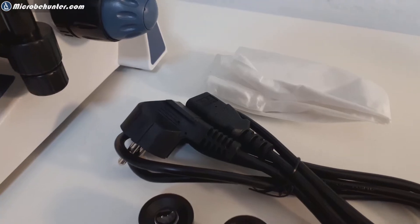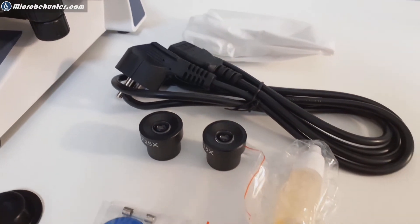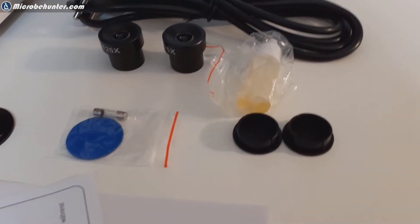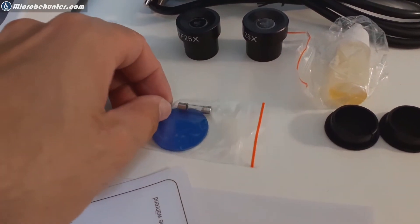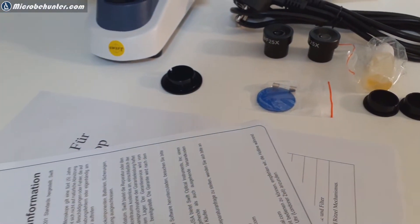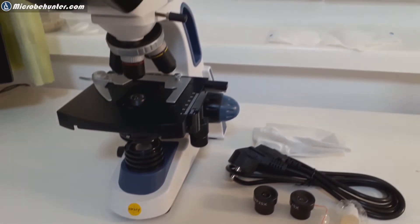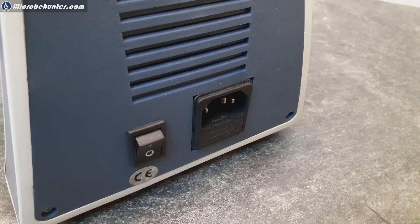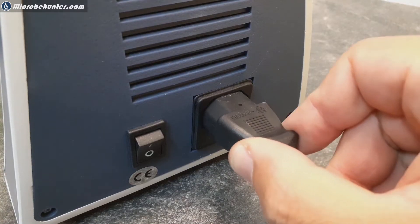This is a piece of paper for protecting the lens. That is basically what's all included here. Immersion oil is included and they also included a fuse and a blue filter because the microscope of course also has a filter holder.